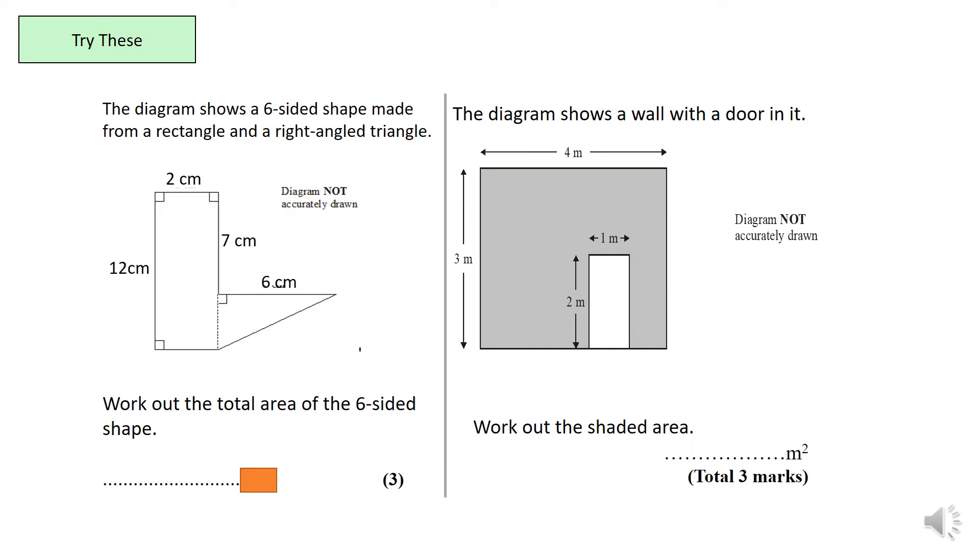Now what I want you guys to do is try both of these questions. If you look at the question on the right, it's very similar to the one we've just done. And the question on your left is an area of a compound shape, but I've done the split for you and instead of having an L shape, we've got a triangle and a rectangle together. So can I ask you guys to pause the video now and have a go at these two questions?